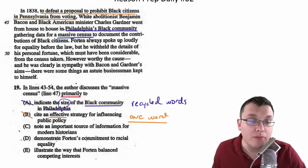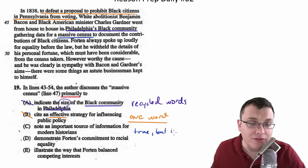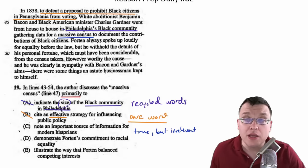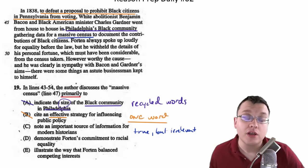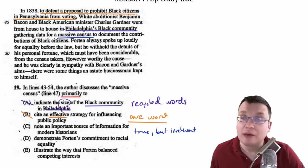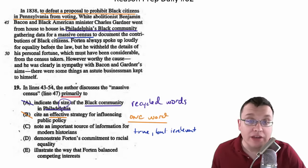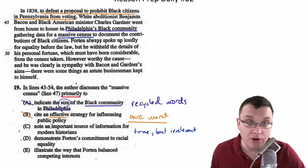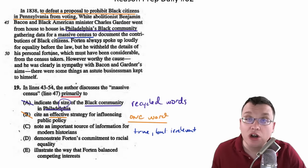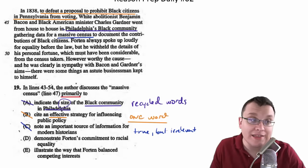Choice C: note an important source of information for modern historians. This is one of those traps that's true but irrelevant. A census would be, in theory, a really useful source for historians — you can learn a lot about a population, its characteristics, and other things useful for studies. But is that the point the author is trying to make here? No. So C is true — a census is an important thing historians can use — but the passage doesn't talk about it, so you can't pick it. It's irrelevant to what's going on in the passage.